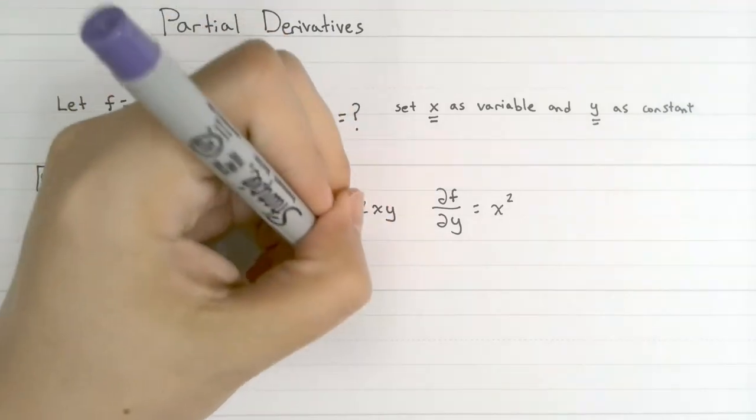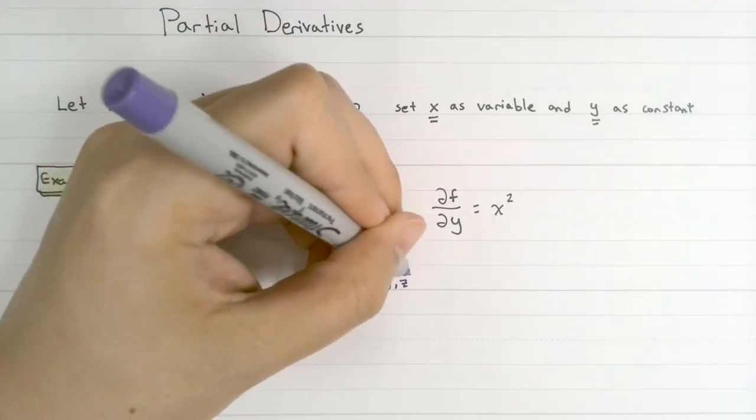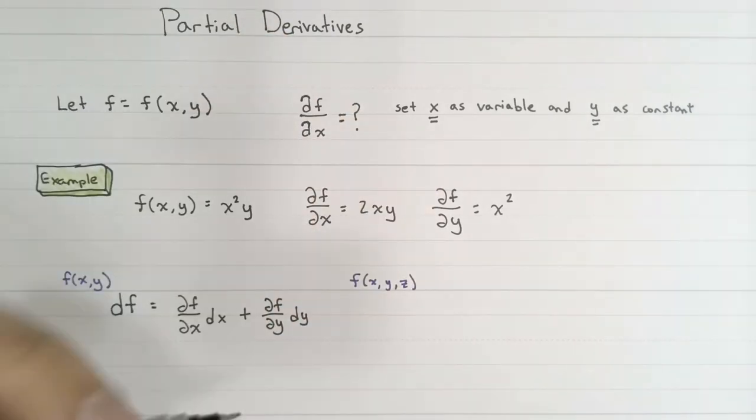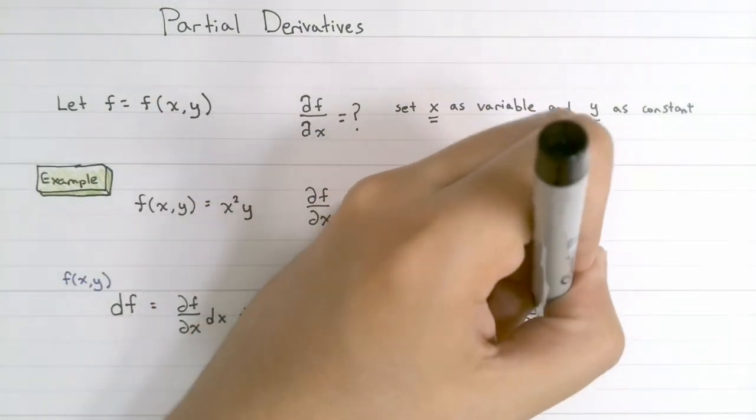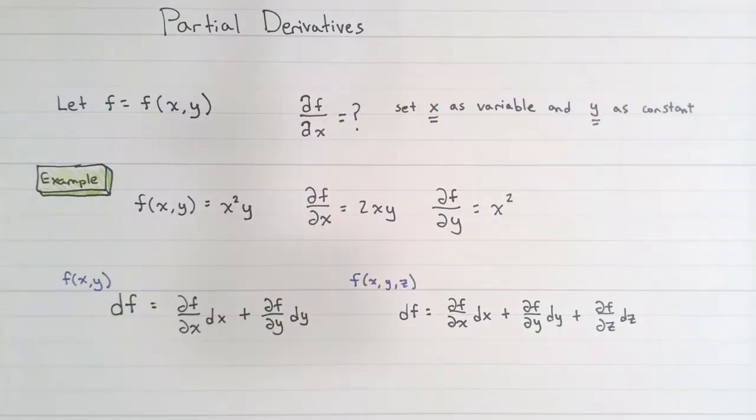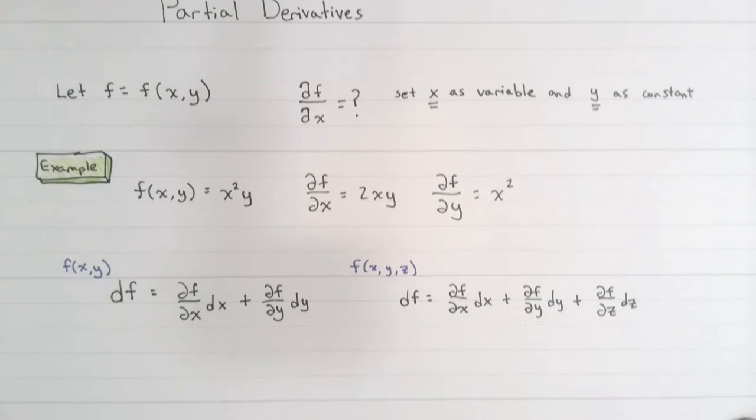In fact, this can apply for however many variables you have. If f had three variables, then we would apply this for all three of those variables. Let's keep that definition of a differential change in mind, because it will become helpful when we're applying additional rules such as the chain rule.